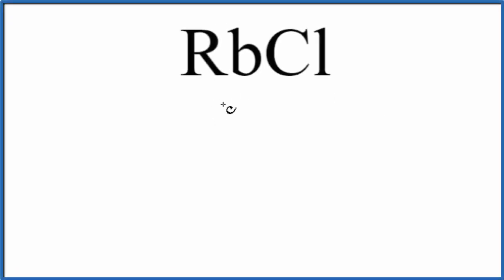In this video, we'll write the Lewis structure for RbCl. This is rubidium chloride. This is an ionic compound since we have a metal and a non-metal. In an ionic compound, the metal is going to transfer valence electrons to the non-metal.